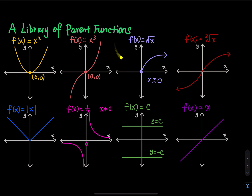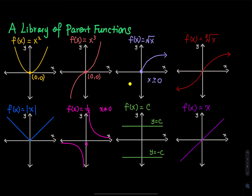The next graph is f of x equals the square root of x. Square root of x is an increasing function — it starts at zero comma zero and increases. Be aware that x must be greater than or equal to zero, because there is no graph on the left-hand side of the y-axis. In quadrants two and three, x is negative, and the square root of a negative number is undefined. For example, the square root of four is two, but the square root of negative four is undefined.